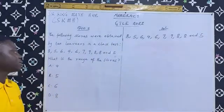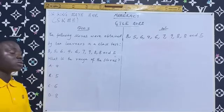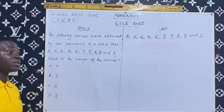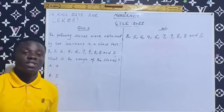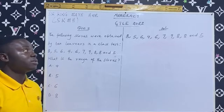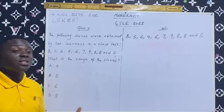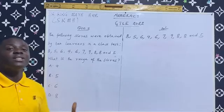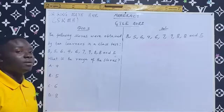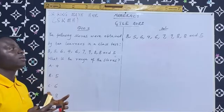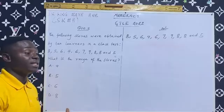The question asks: what is the range of the scores? In statistics, we have something called measure of dispersion, and one of the instruments of measure of dispersion is the range. Range is the difference between the largest and the least number in a given data set.